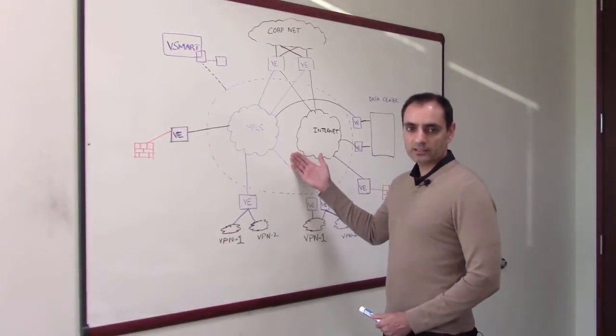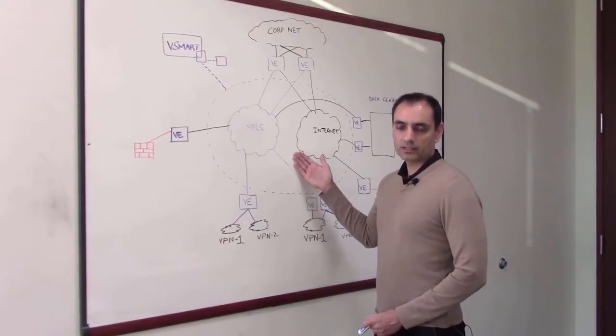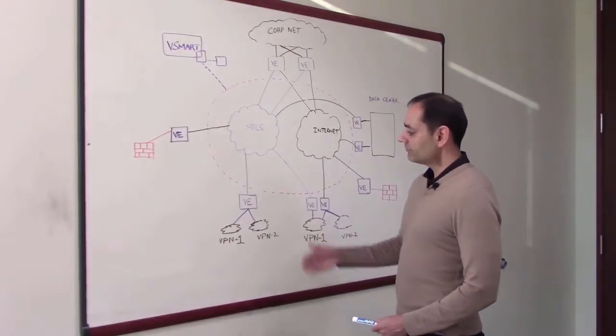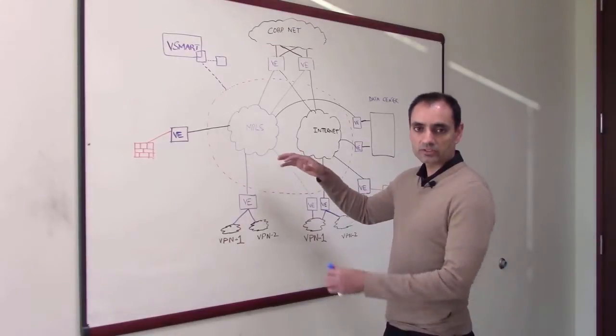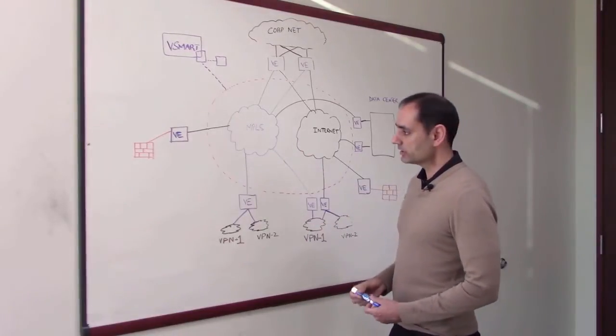Let me start by describing the diagram here on the whiteboard. I have multiple sites which are connected to multiple transports and there is an overlay which is orchestrated on top of those multiple transports.